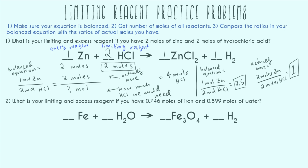However you do this step, there are a bunch of different ways, and this is the tricky part. If you don't understand, look at your notes, watch this again, or look up other approaches. But however you get to it, you need to understand this concept of ratios and figure out which reactant is excess and which is limiting. Now let's do number two.